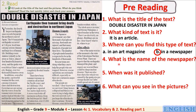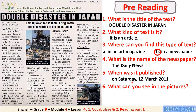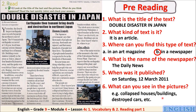Question four: What is the name of the newspaper? — 'The Daily News.' Question five: When was it published? — On Saturday, 12 March 2011. Question six: Look at the pictures — what can you see? — Collapsed houses or buildings, destroyed cars, etc. Well done, my students!